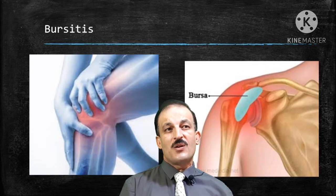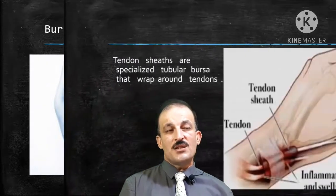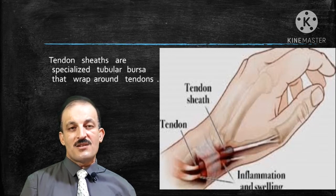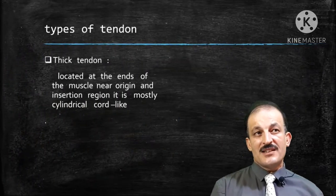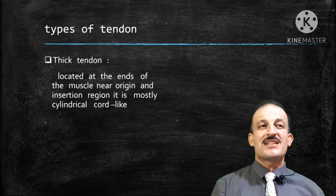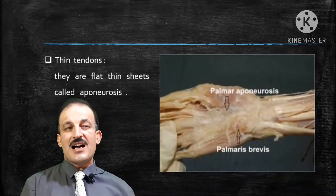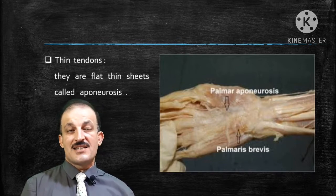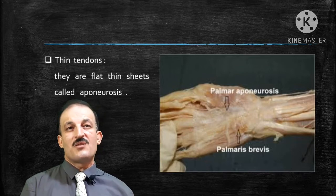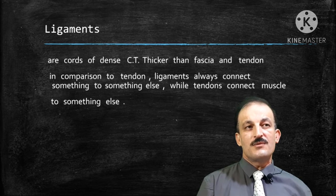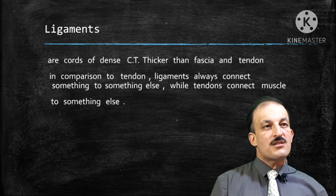Inflammation of bursae is called bursitis. Tendon sheaths are specialized tubular bursae that wrap around tendons and also decrease friction. Types of tendon: thick tendons are located at the ends of muscles near the origin and insertion region, mostly cylindrical and cord-like. The other type is thin tendons, which are flat, thin sheets called aponeurosis — for example, the palmar aponeurosis.